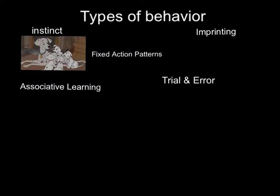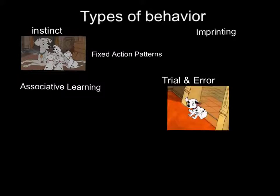Trial and error is when an animal connects its behavior with an environmental response. For example, when a dog learns not to leave the room because every time he leaves the room, he gets shocked by his collar.